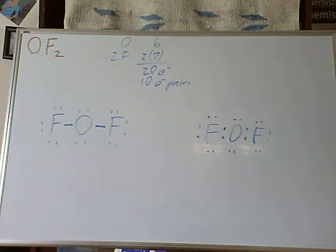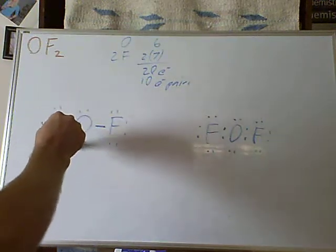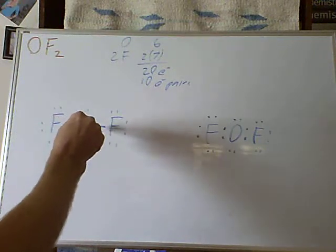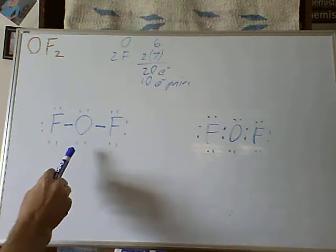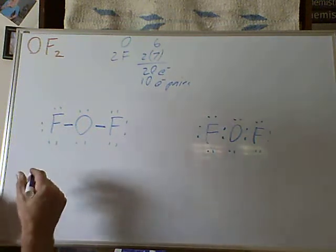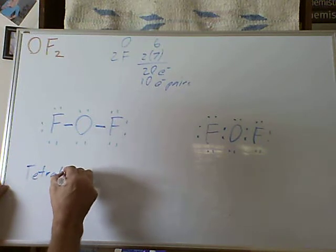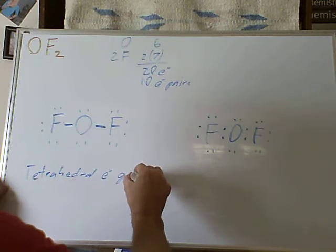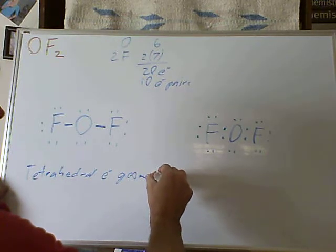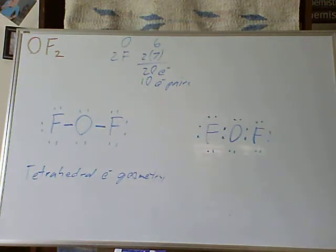If you want to continue it to figure out the geometry, we look at the oxygen, the central atom. We see 4 pairs, it's 2 bonds, 2 non-bonding pairs, so it has a tetrahedral electron geometry, but with 2 attached atoms and 2 lone pairs, that makes it a bent molecular geometry.